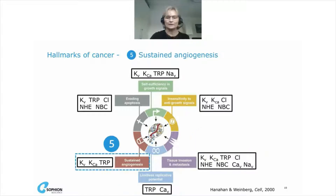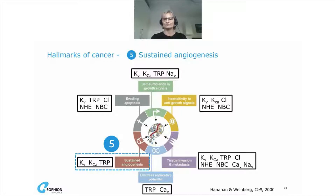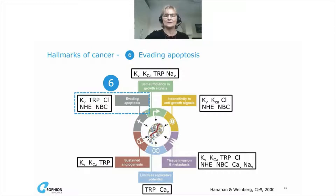Cancerous tumors need their own nutrients and oxygen supply while removing metabolic waste products like CO2. Sustained angiogenesis is the fifth hallmark of cancer — it generates blood vessels to supply energy and remove respiration byproducts that tumors need to sustain growth and replication. The sixth hallmark is evading apoptosis, which complements limitless replicative potential: the ability to avoid programmed cell death.